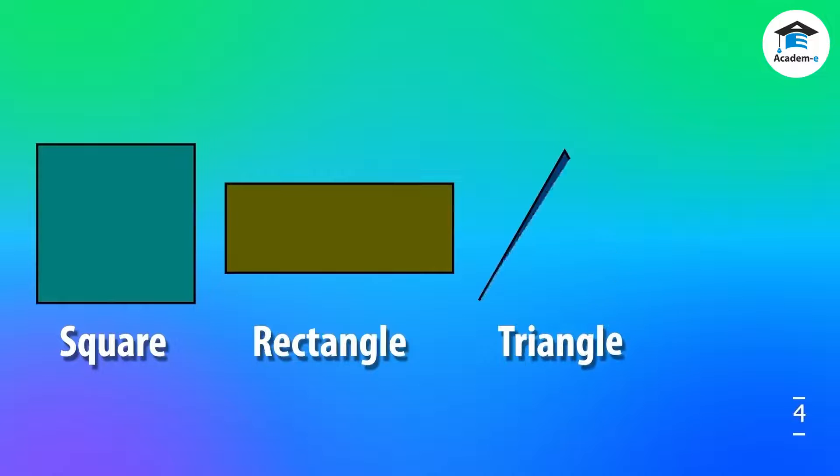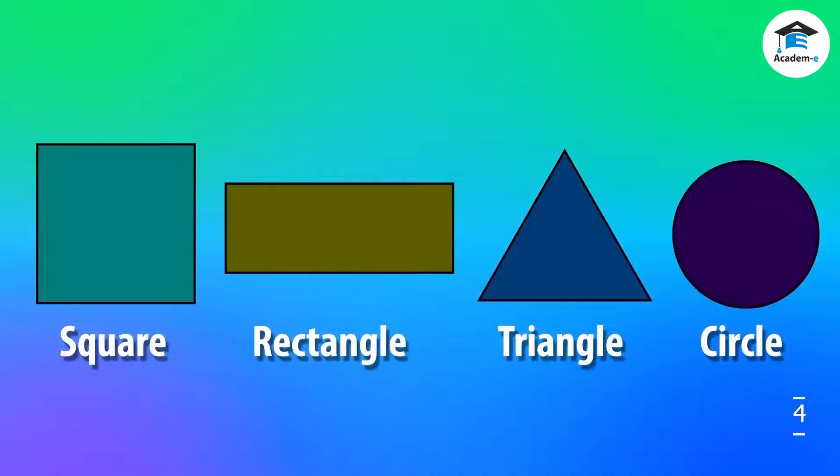There are many kinds of 2D shapes, but we will focus on the four basic geometric shapes: namely square, rectangle, triangle, and circle. Each shape has its own characteristics.